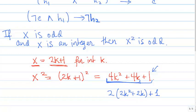And there I have it. I know that this part here is an integer. 2k²+2k is an integer since k is an integer. So now I've taken x² and I've expressed it as 2 times some integer plus 1. And therefore, x² is odd.